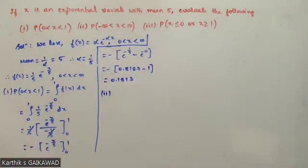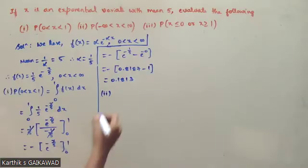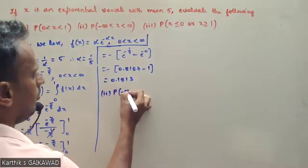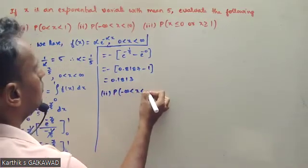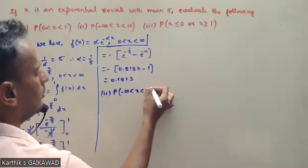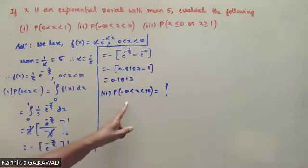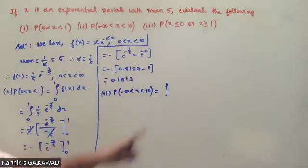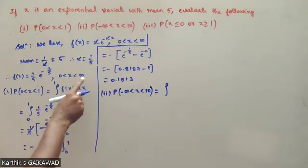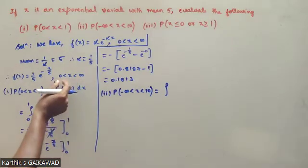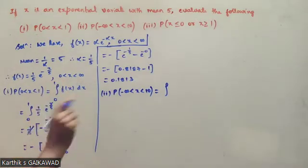Second question: P(x between minus infinity to 10). Since the exponential distribution is defined from 0 to infinity, P(minus infinity to 0) equals 0, so this reduces to P(0 to 10).